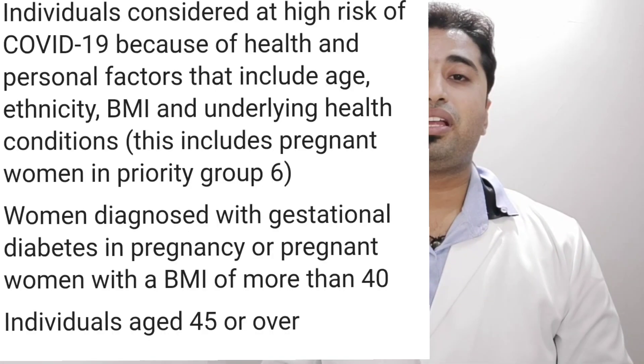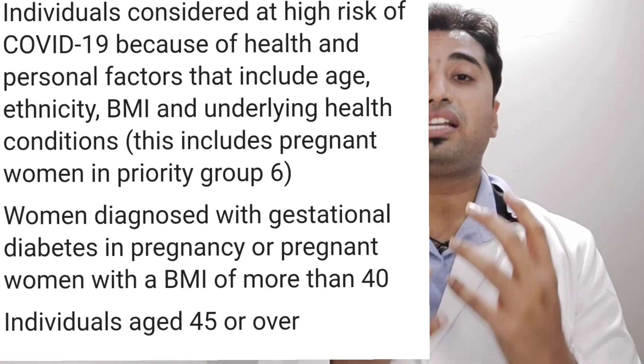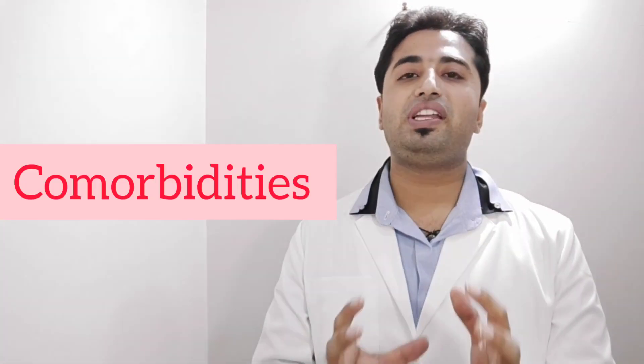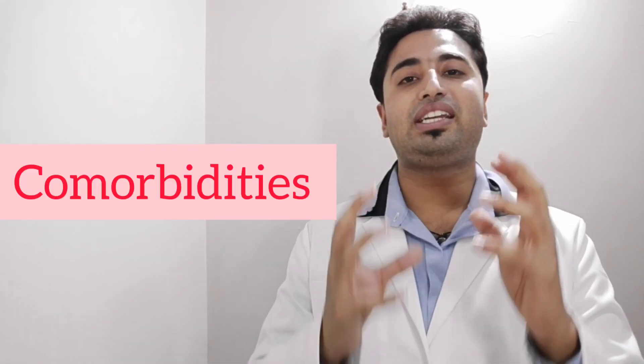Now, coming to the second category. In this category, it is advisable to take the vaccine. So, who come under this category? Let's consider that a pregnant woman is a known case of congenital heart disease, or she has a kidney problem, or she is a case of diabetes, hypertension, or any of these conditions which consider as comorbidities or immunocompromising conditions, they must take the vaccine.